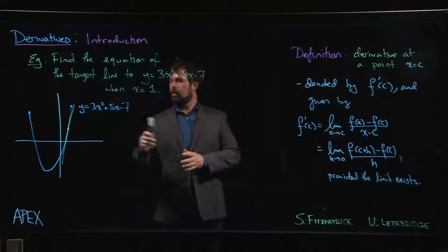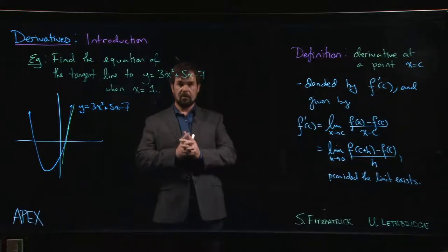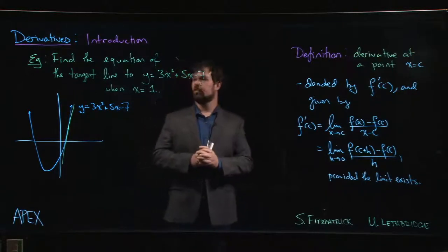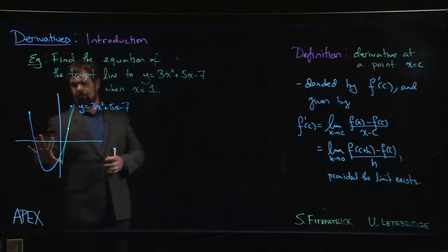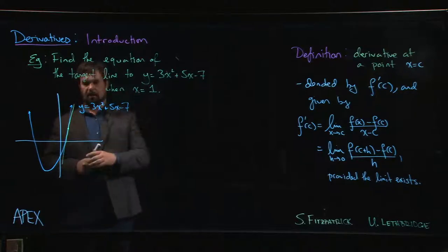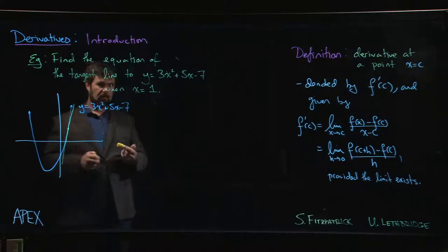We're going to look at an example here using this definition for the derivative that we've introduced to determine the equation of a tangent line to this parabola at a particular point, so when x is equal to 1.